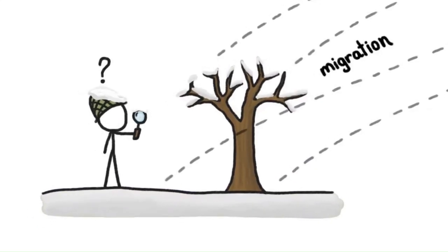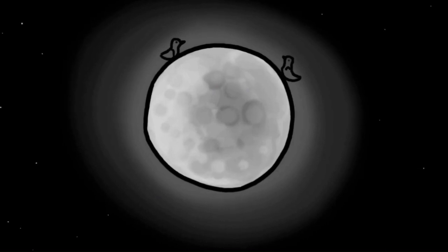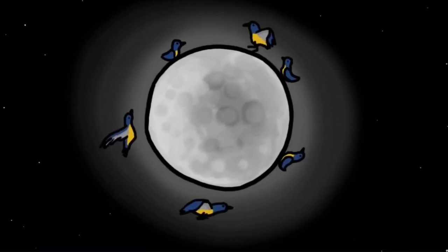Another theory was that the birds left entirely and flew far away for the winter. We call this migration, but they didn't have a clue where the birds would go. For example, a pamphlet from 1703 suggested that they went to the moon.